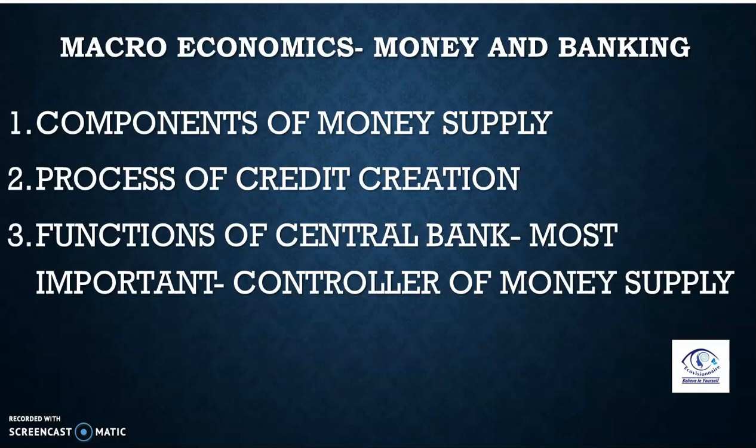Coming to topic number one, it's components of money supply. First of all, you have to go for the definition of money supply, and then move to components of money supply. We have two components of money supply: currency held with public and demand deposits. Some students are confused with M1 measure of money supply and components of money supply. M1 is a measure which has currency, demand deposits, and other deposits. But the components of money supply are only two: currency held with public and demand deposits. So don't get confused.